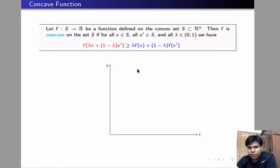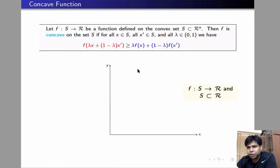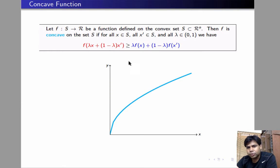We are going to plot the graph of f. If the function f is a function from S to R, where S is a convex subset of the real line, then the concave function defined on that subset of the real line taking real values is going to look like this. Let us check how this inequality holds for arbitrary x, x prime and arbitrary lambda when the graph of the function looks like this.